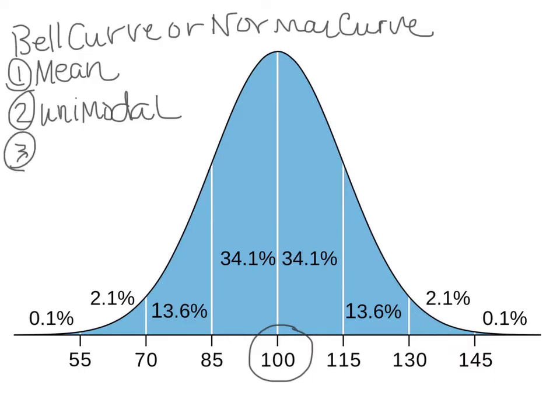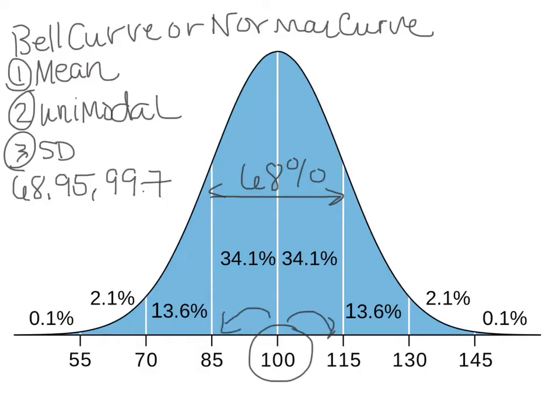The bell curve also has predictable standard deviations as you can see here. So standard deviations are how far away we get from the mean. And in a normal bell curve, the standard deviations are going to be—we're just going to say SD—we have 68, 95, and 99.7. And so what this means is that 68% of the scores will fall within one standard deviation from the mean.